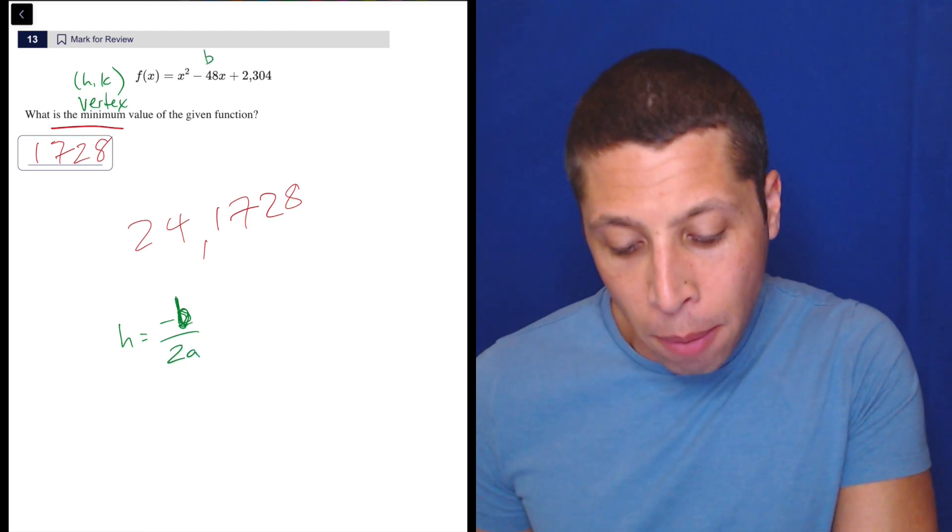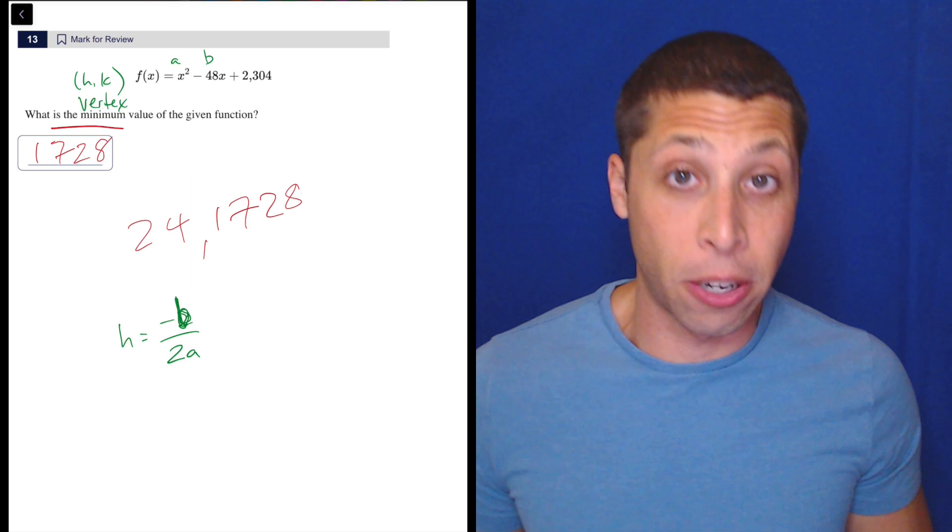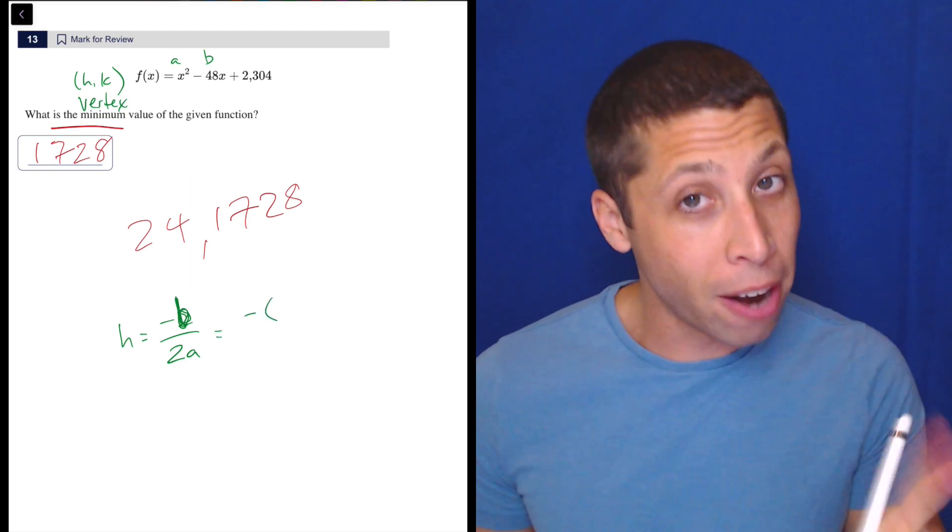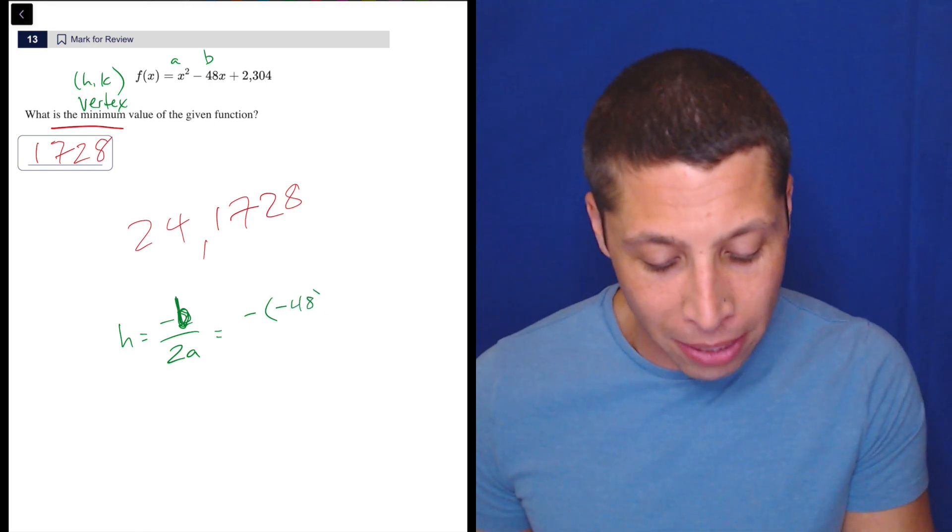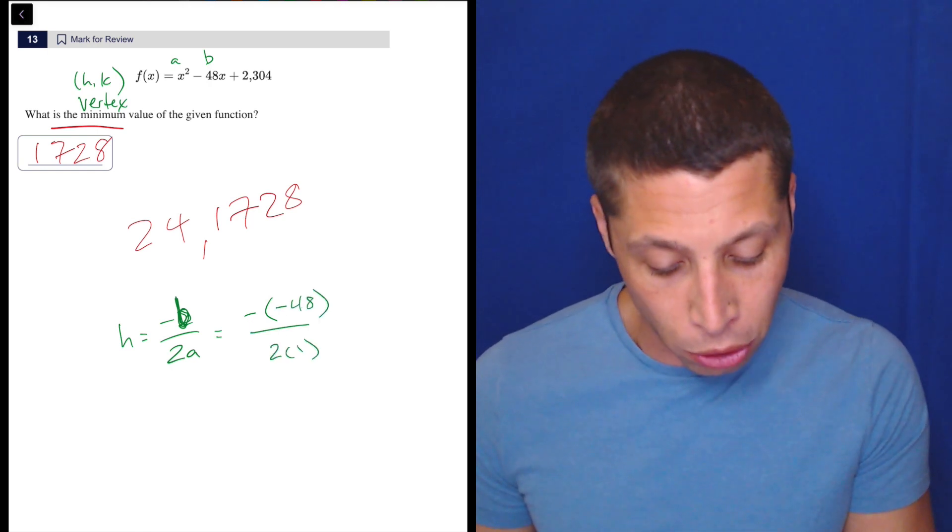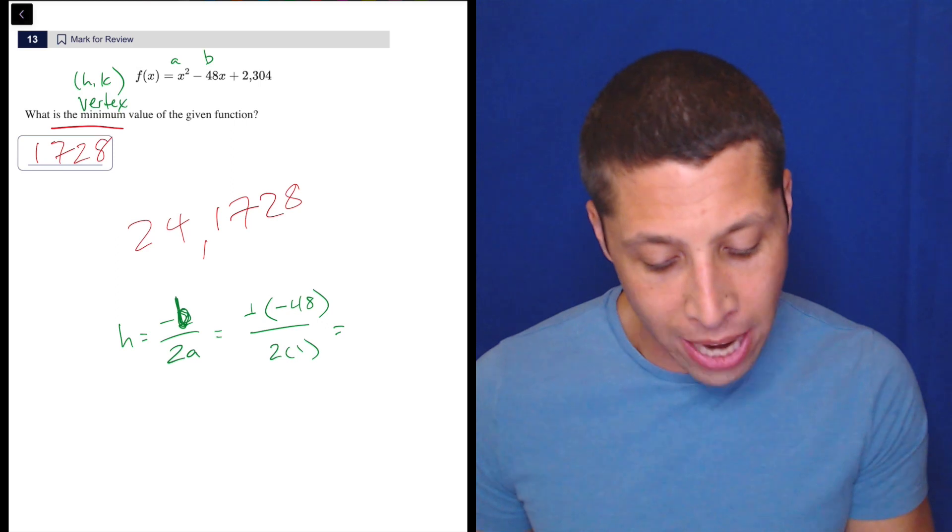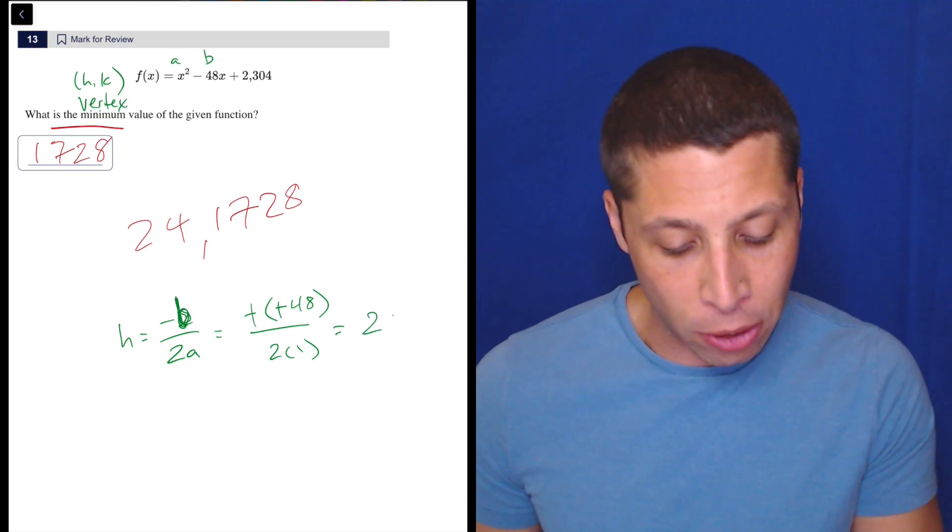We're getting that from this equation because this is the standard form equation. We're going to put the b in. But here's where the error could happen - it's negative 48 is the b. So we've got to double up on those negatives and then over 2, and our a is 1. So that's going to be 48, positive 48, divided by 2 is 24.